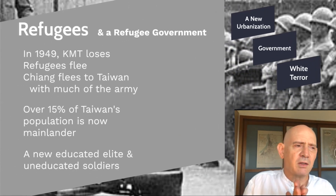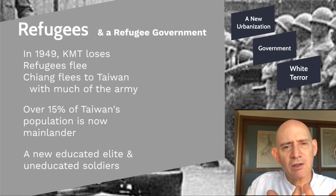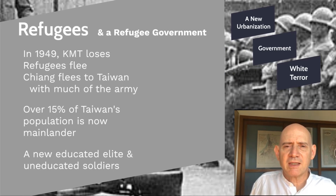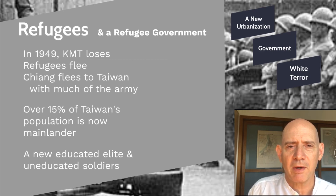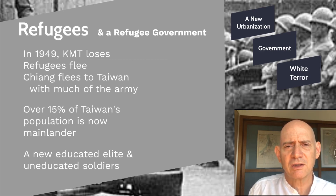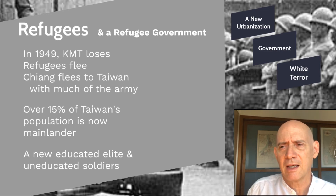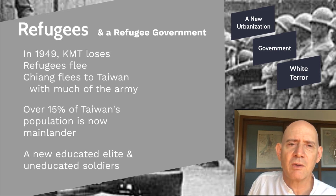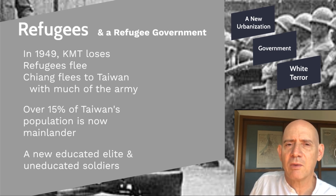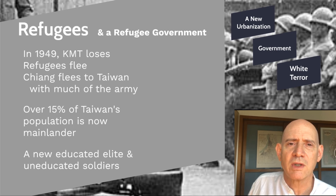So mainlanders and Taiwanese were often doing very different jobs. The separation between mainlander and Taiwanese is probably not as great and clear as between Japanese and Taiwanese under the colonial period, but there are similarities. There's probably more intermarriage between mainlanders and Taiwanese — Japanese and Taiwanese could not intermarry until wartime, when some started but not many.